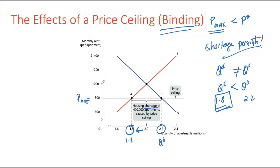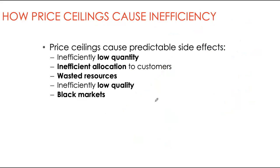The binding price ceiling always creates a shortage that lasts as long as P-max remains in place, and causes exchange quantity to be lower than under free market conditions. Price ceilings also have many other side effects: they cause inefficiently low quantity exchanged, inefficient allocation to consumers, wasted resources, inefficiently low quality, and they can lead to black markets.